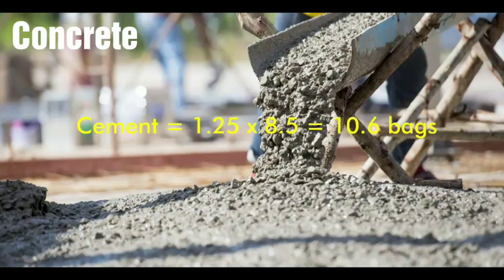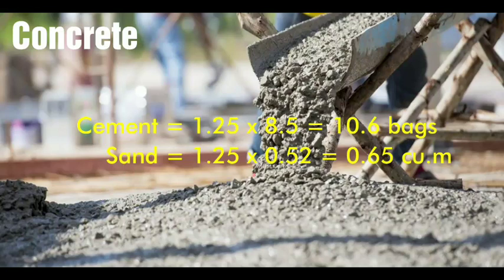Cement: 1.25 times 8.5 is equal to 10.6 bags of 40 kg cement. For sand: 1.25 times 0.52 is equal to 0.65 cubic meters of sand — that's more than half a cubic meter.